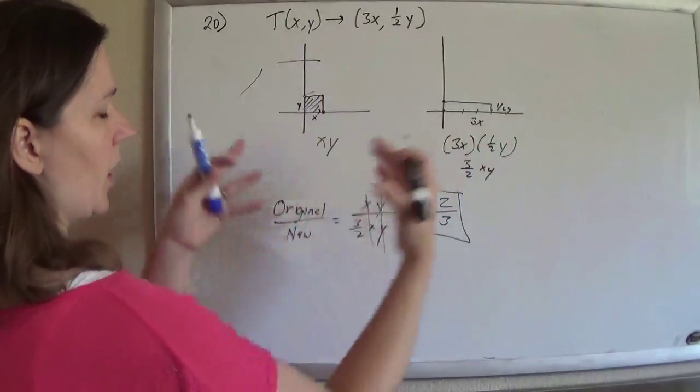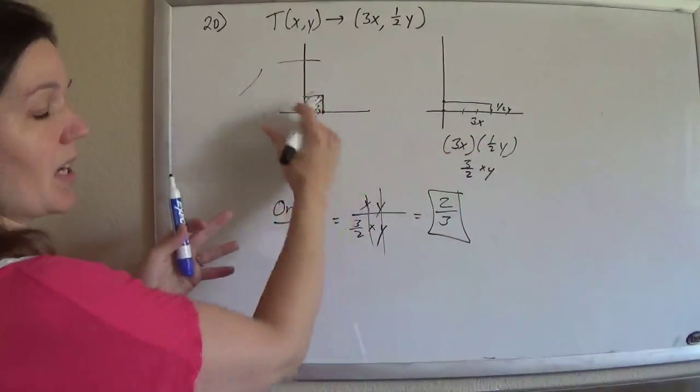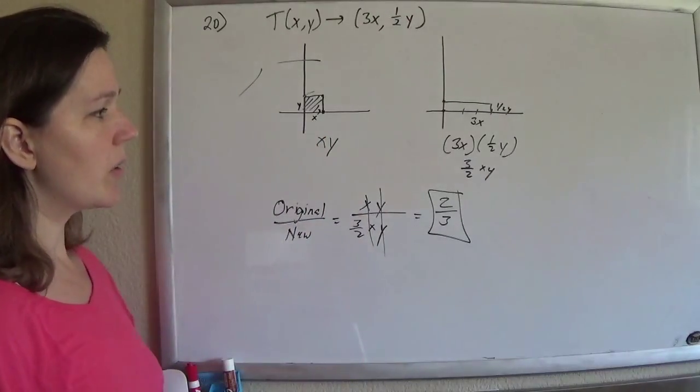So every unit, the area is going to be 3 halves times every old unit of area. And so you just get 2 thirds.